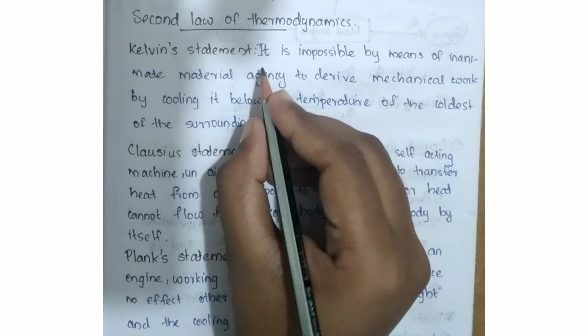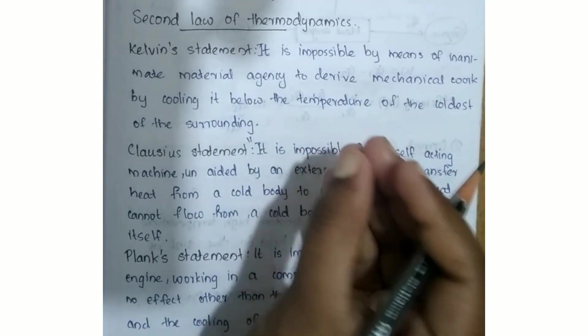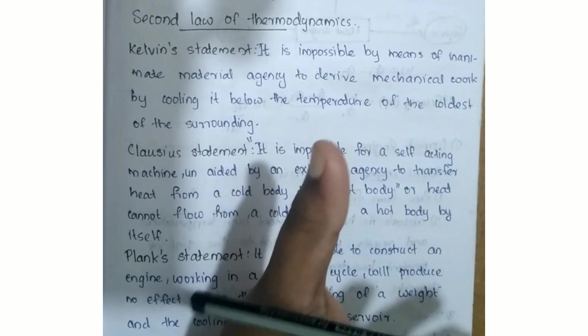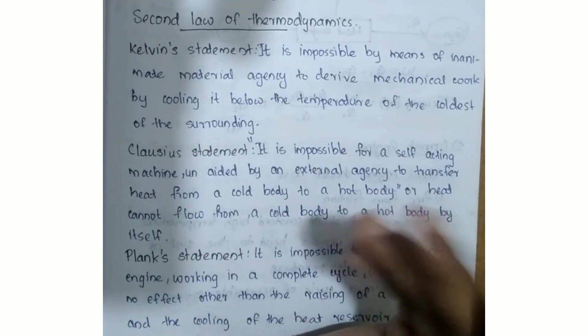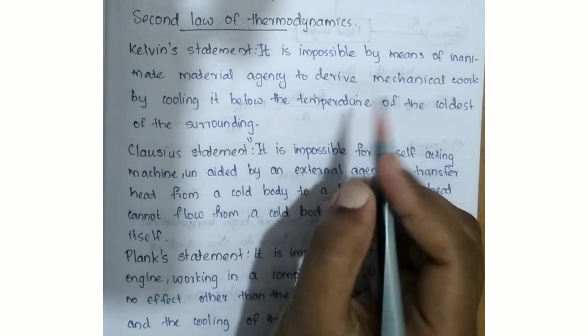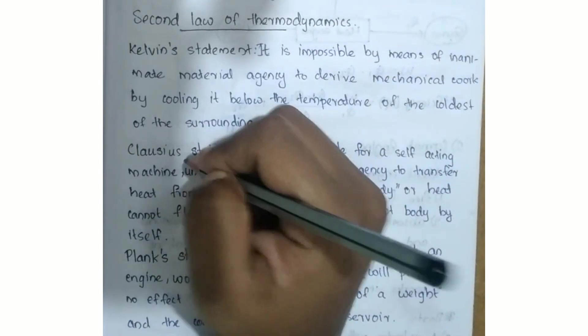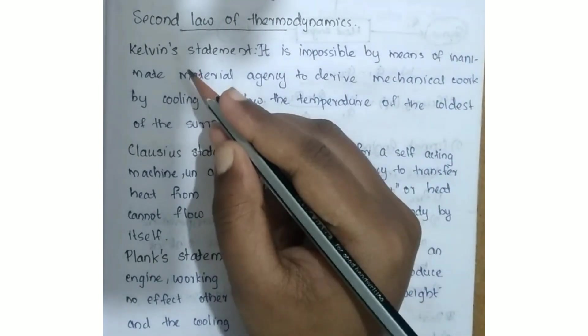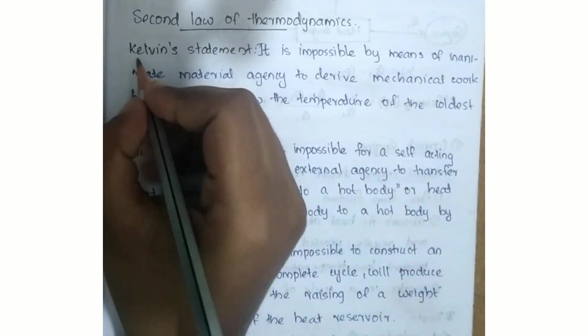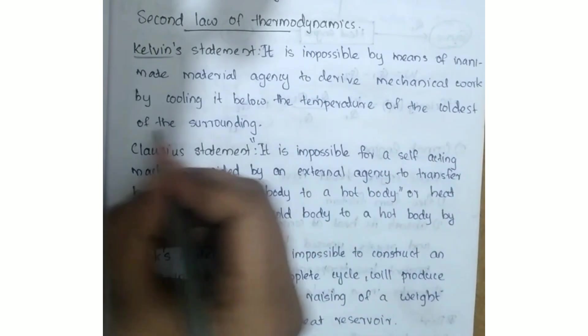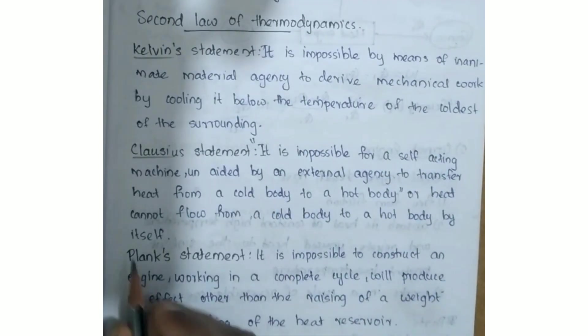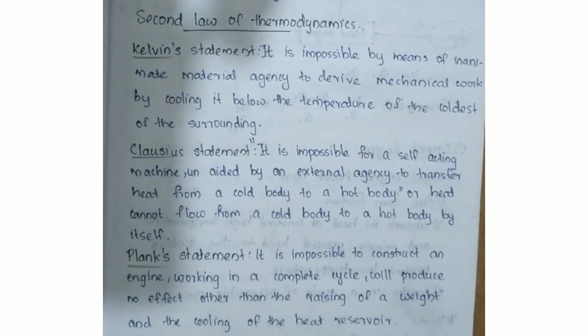There are three statements of the second law: the Kelvin statement, the Clausius statement, and the Planck statement.